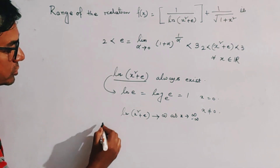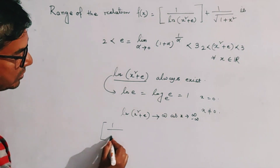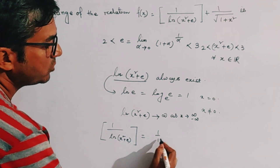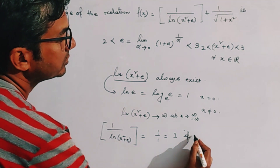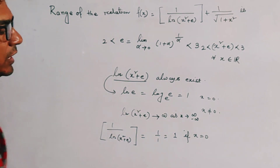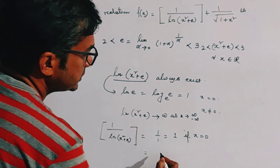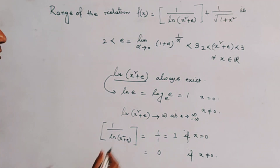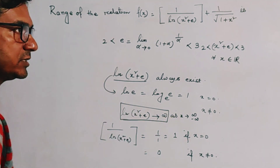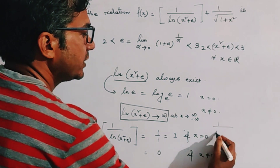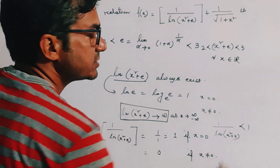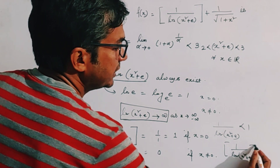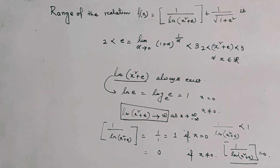So ⌊1/ln(x²+e)⌋ equals 1 when x = 0, since 1/ln(e) = 1. For x not equal to 0, ln(x²+e) is greater than 1, so 1/ln(x²+e) is less than 1. Therefore, by the definition of the greatest integer function, ⌊1/ln(x²+e)⌋ = 0 for all x ≠ 0.